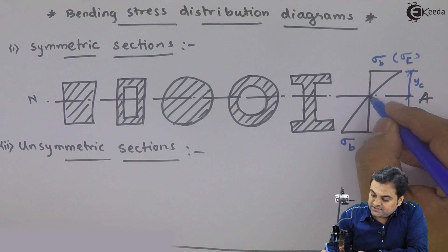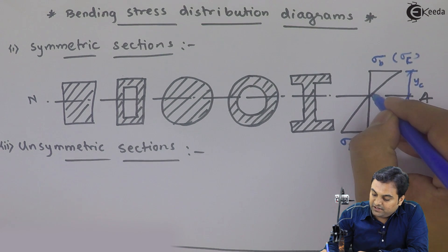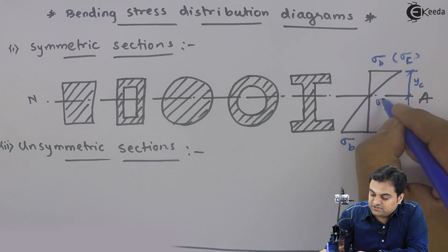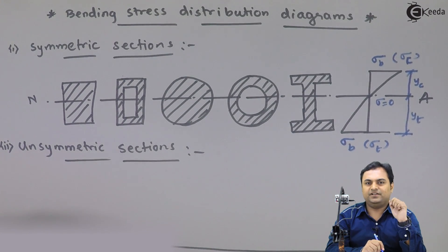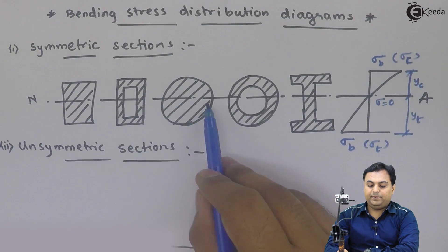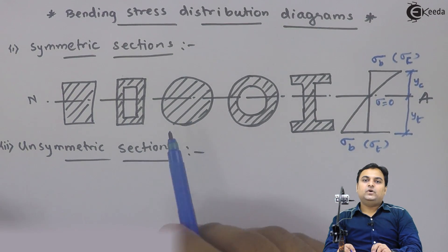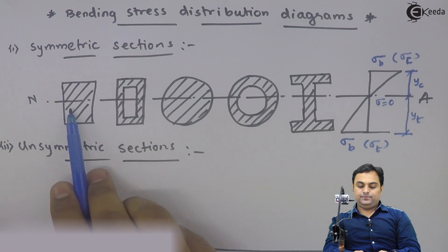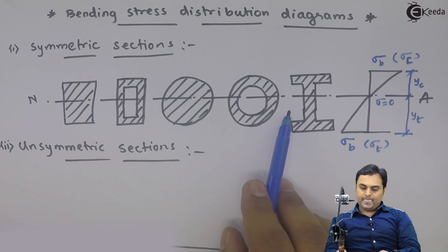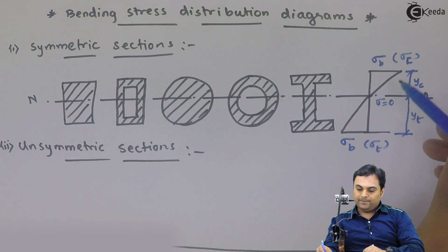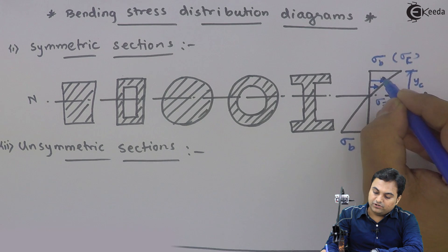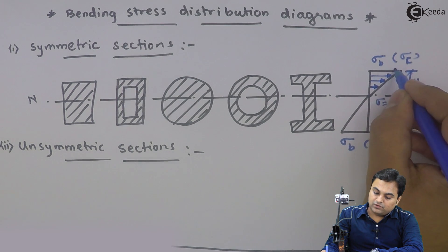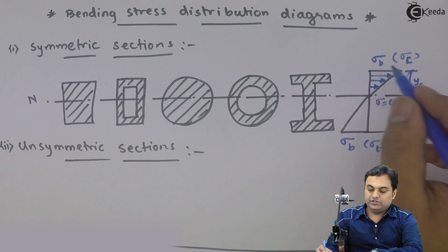यह stress distribution कैसा है — see here: अगर मैं neutral axis से उपर जाता हूँ, neutral axis पे stress is zero. So this is one way to understand: neutral axis means center पे bending is zero, okay it means no bending stress is developed at the center. So bending stress center पे zero हो जाएगा, फिर जैसे-जैसे मैं section पे upwards जाऊंगा, the value of bending stress goes on increasing.